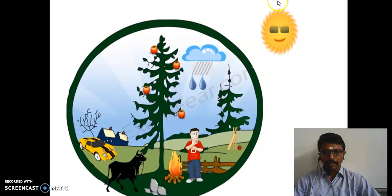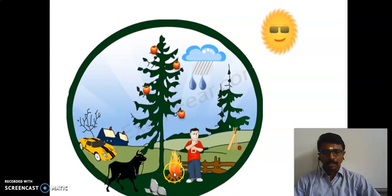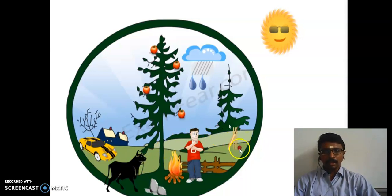Here you can see some images. In these images, everything is matter. So what is matter? Anything that occupies space is known as matter. Here the trees, apple, buffalo, stone, fire, human being, car, cricket bat, stump, and ball — everything is matter.